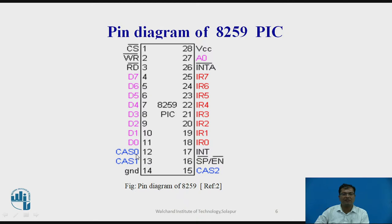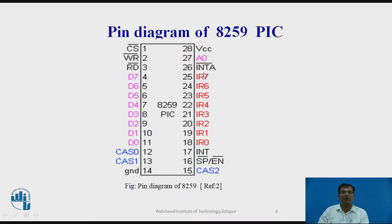CAS indicates cascade: CAS0, CAS1, and CAS2. These 3 pins are used for cascading — with 2 raised to 3, 8 different 8259s can be cascaded. SP and EN bar are used for slave purpose. INT indicates interrupt and INTA is interrupt acknowledgement. When an external interrupt comes, it is indicated through pin number 17, and the acknowledgement is sent through the INTA pin.